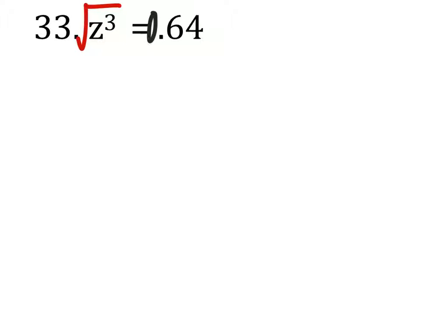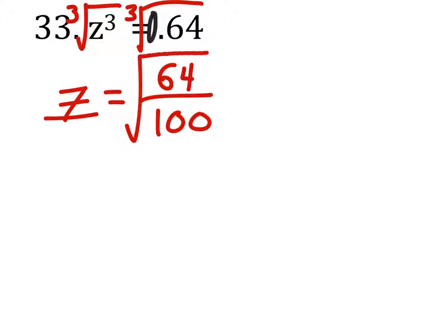So now when we cube root this, and we cube root that, as Isaac said, then we get Z equals, this would be 64 over 100, cube root.